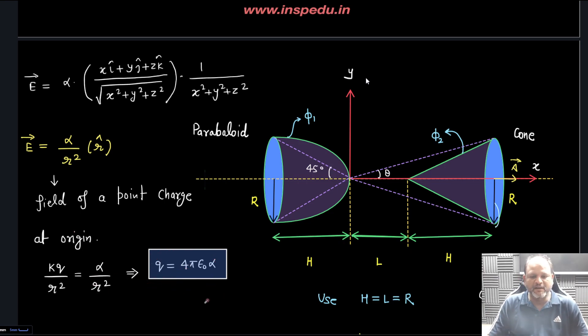Here it is α/r² so we know the value of Q as 4πε₀α. Since it is resembling the field of a point charge, we can treat this problem as if there is a point charge placed at this point.